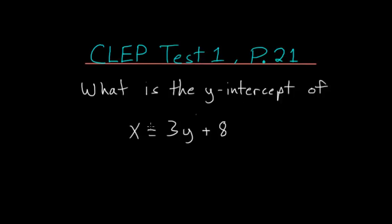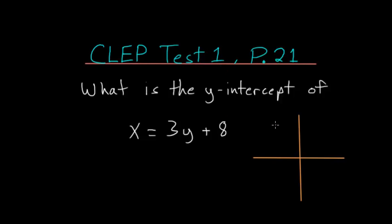What is the y-intercept of x equals 3y plus 8? So if you were to graph an equation like this, you would end up with a line. And for a line in general, where it crosses the y-axis, this point right here would be the y-intercept.